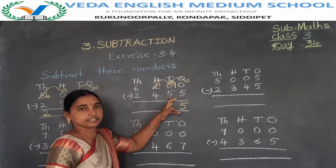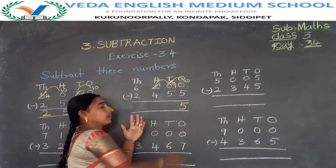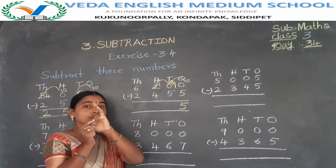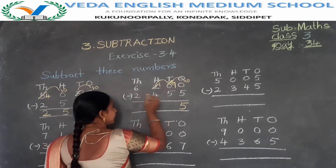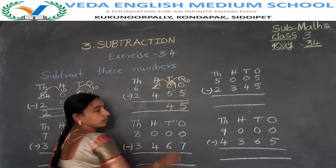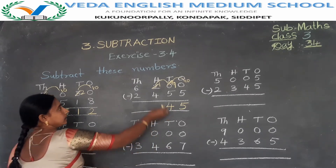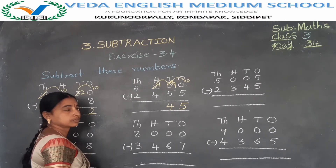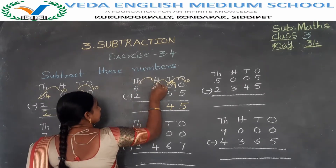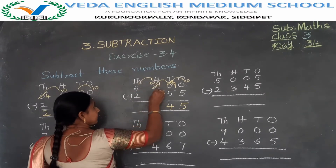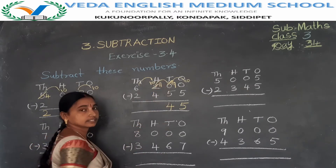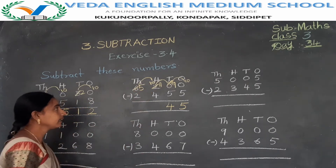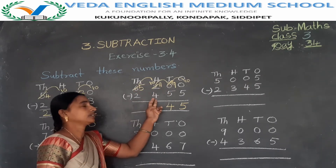In the tens place: 9 minus 5. Backward counting: 8, 7, 6, 5, 4. So 9 minus 5 is 4. In the hundreds place: 1 minus 4 is not possible. So take a borrow from the thousands place to the hundreds place. 10 plus 1 is 11. 6 becomes 5.